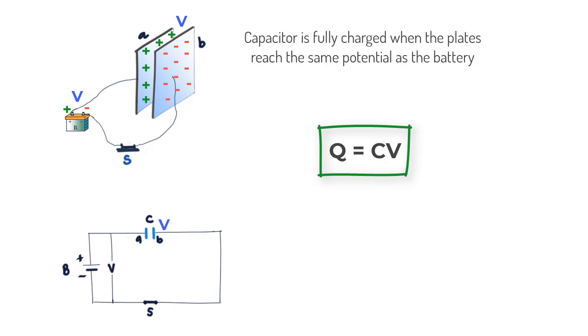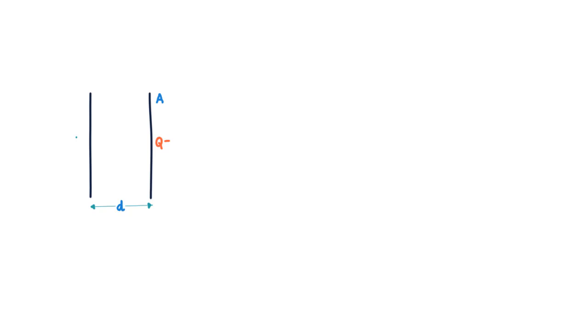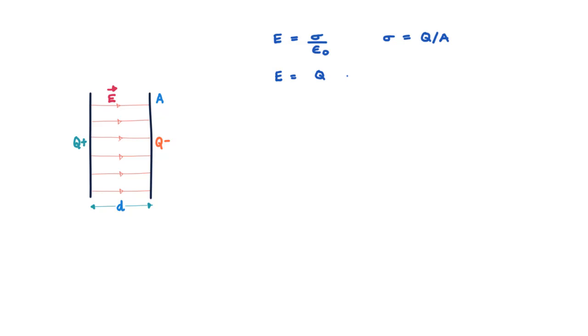This brings us to the next question: how do we measure capacitance C for various shapes? Start with the simplest form — two plates each with area A, separated by a small distance d. When charged to Q, a uniform electric field E is set up between the plates. For this arrangement, E equals σ/ε₀, where σ is the charge per unit area (Q/A), so E = Q/(ε₀A). We also know that the potential difference V between the plates with a uniform field E equals Ed.